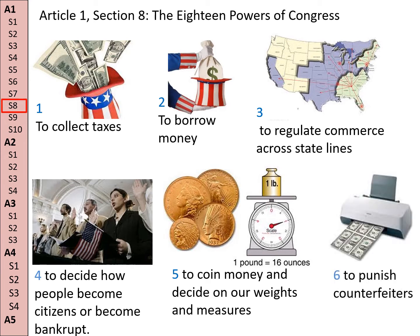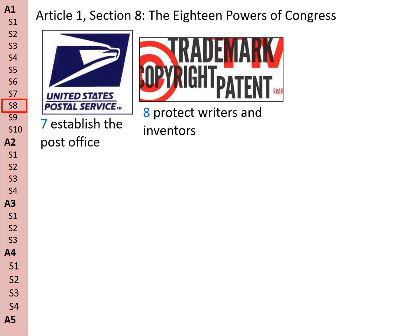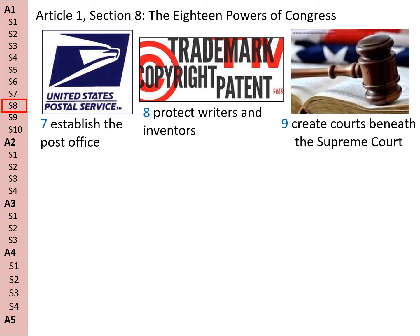Power number six: they have the power to punish counterfeiters. Power number seven: to make the post office. Power number eight: to protect writers and inventors with trademarks, copyrights, and patents. Power number nine: to create the courts beneath the Supreme Court. The Constitution created the Supreme Court, but Congress created the courts below the Supreme Court.